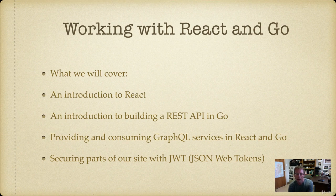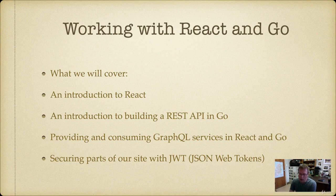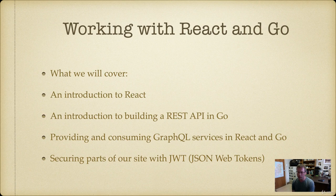We're also going to build a REST API in Go as the backend. That will be a service that provides JSON to our front end — we'll read information from a database and write it to the front end as JSON and display content as appropriate. It will also provide and consume GraphQL, which is another method of getting information from the backend that front-end developers really like. Finally, we'll learn how to secure certain parts of our site using JSON Web Tokens to authenticate and protect parts of our application.